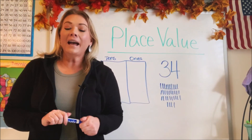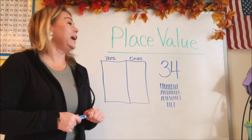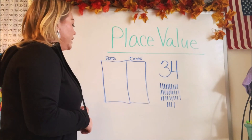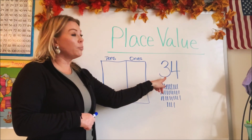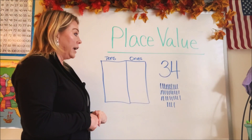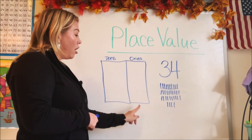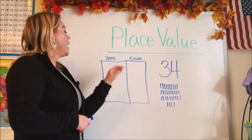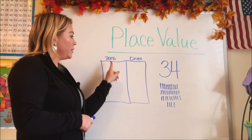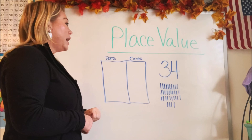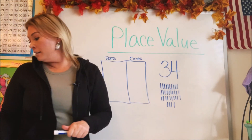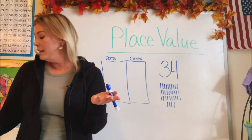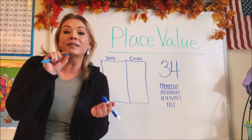Should we do another one? Okay, let's do another one — I know this takes a few practices to understand. I put the number 34 on the board. So then I made my columns. The very last column is the ones and the second to last column is the tens. Remember the tens are the towers and the ones are the little tiny blocks that are left over.